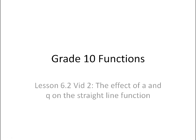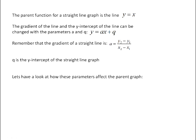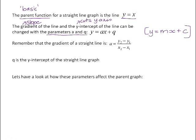We're going to have a look at the straight line function, and in particular the effect of a and q on it. Let's remind ourselves of a few things we've learned so far. The parent function, or the basic graph for a straight line, is the line y equals x. The gradient of the line — gradient is another way of saying slope — and the y-intercept, where it cuts the y-axis, can be changed with the parameters a and q.